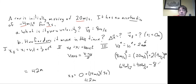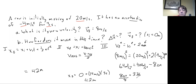We have 8 times delta x on one side. On the other side we have 400 minus 64, which is 336. So delta x equals 336 divided by 8, which equals 42 meters.